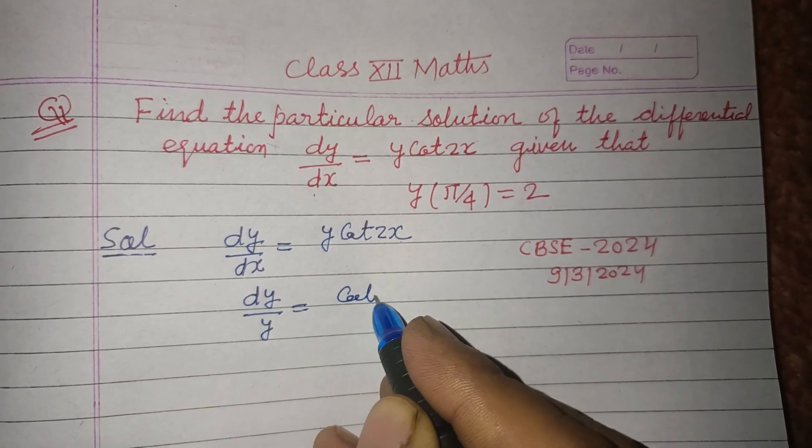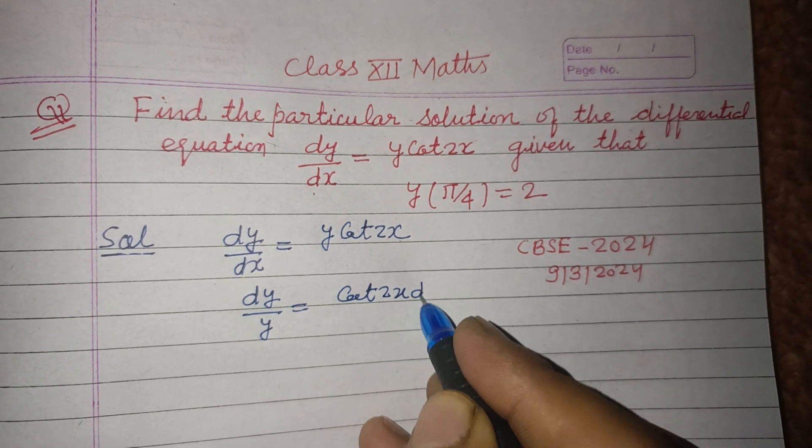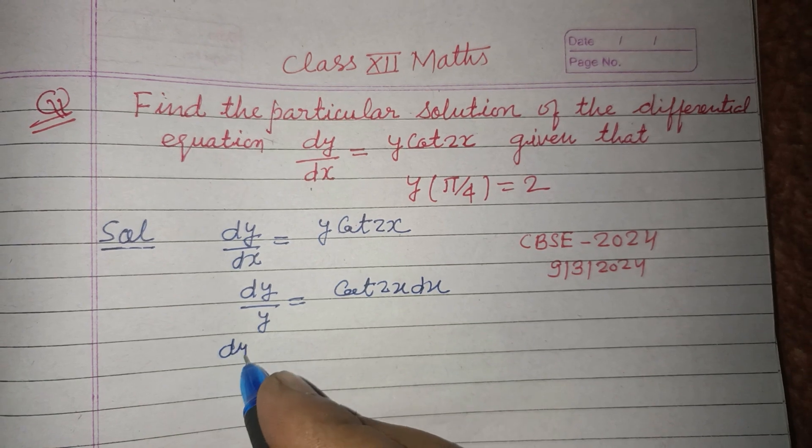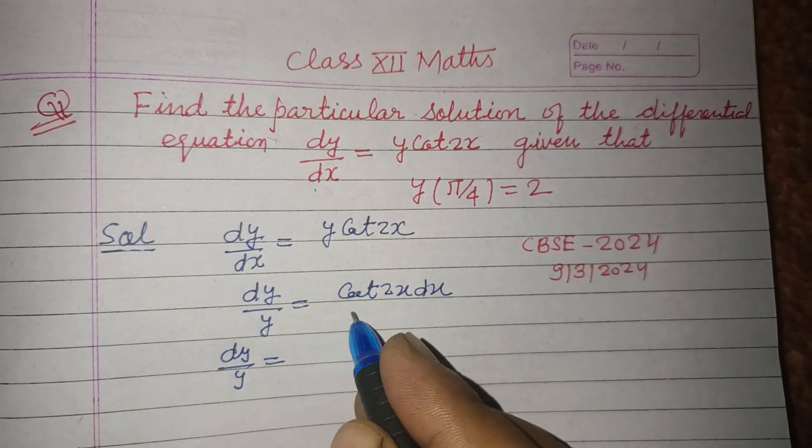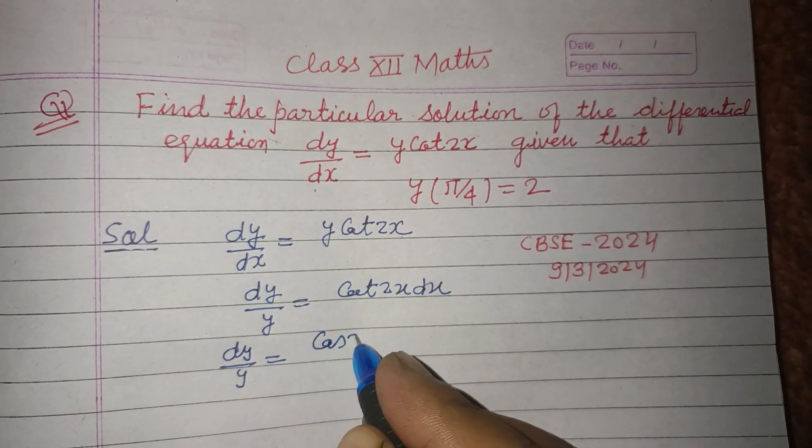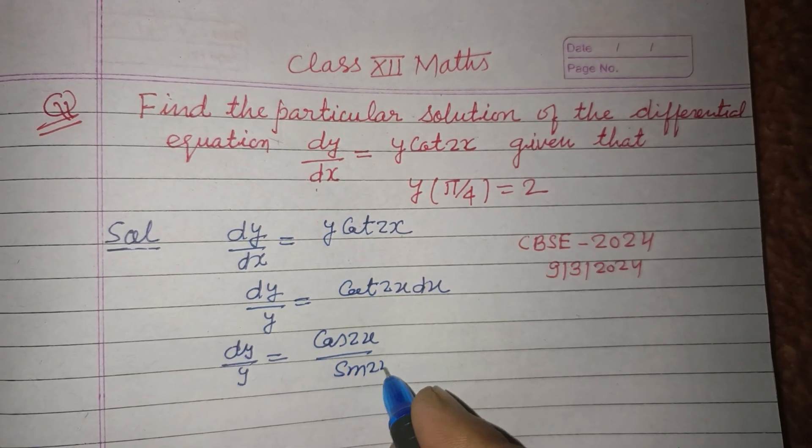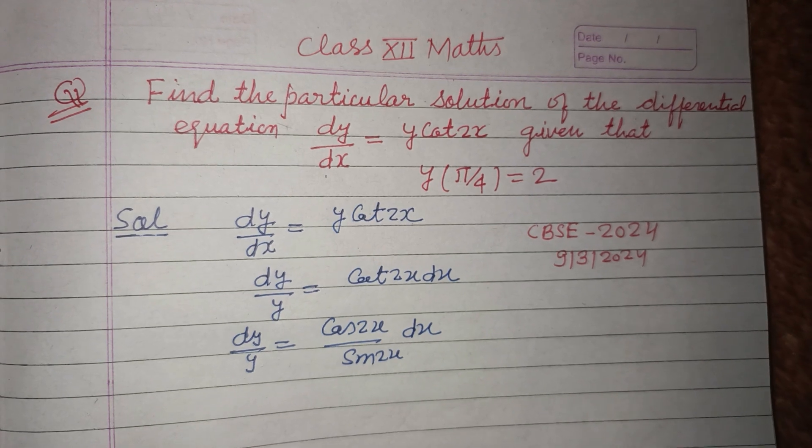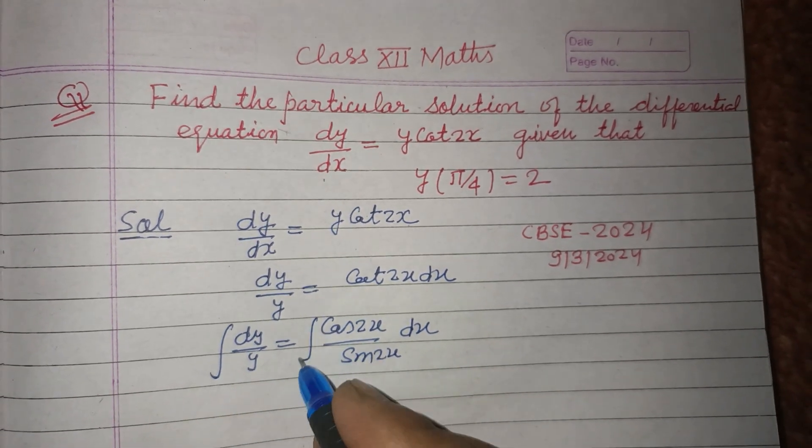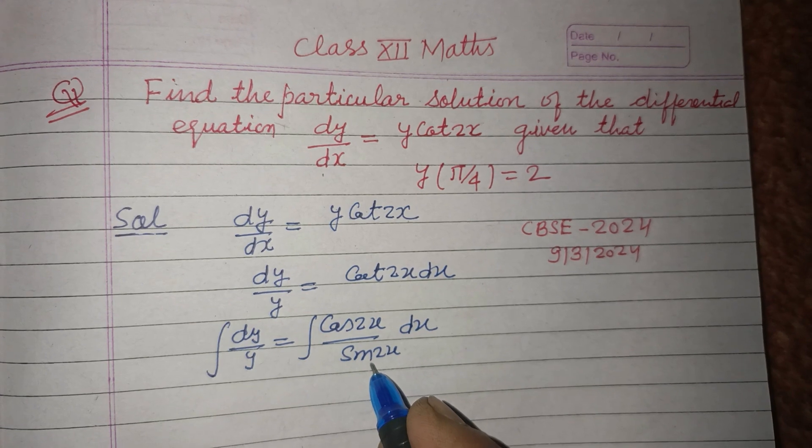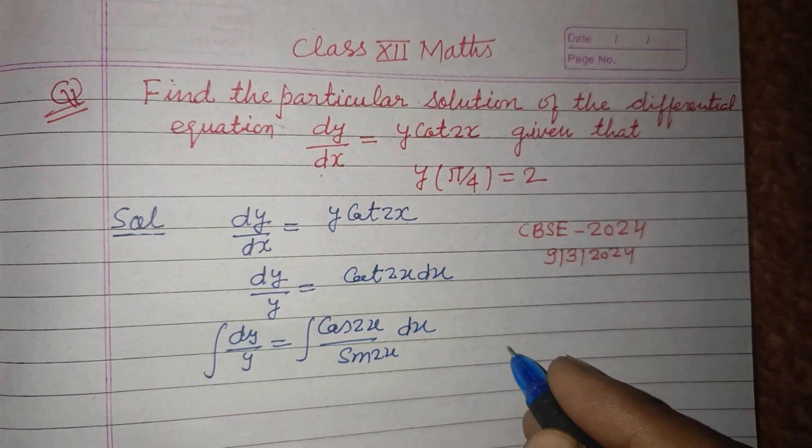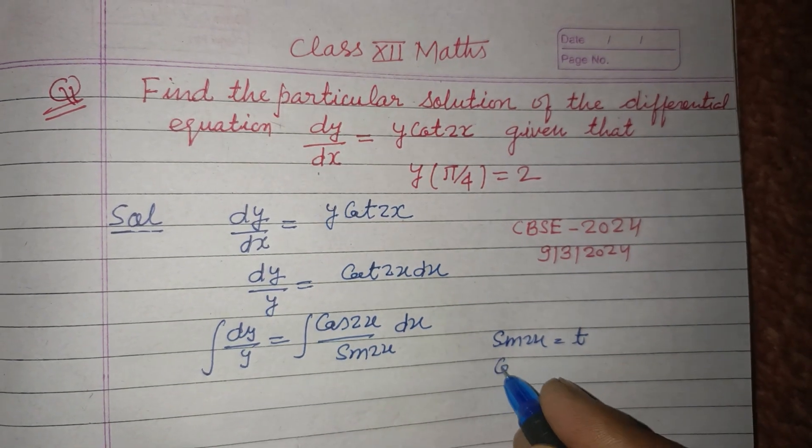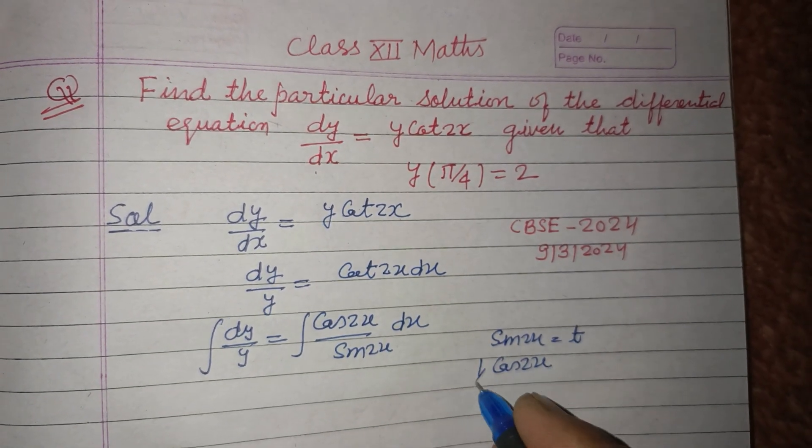dy upon y equal to cot 2x dx can be written as cos 2x over sin 2x dx. Now integrating both sides, if you take sin 2x as t, so this is cos 2x times 1/2 times 2 dx equal to dt.